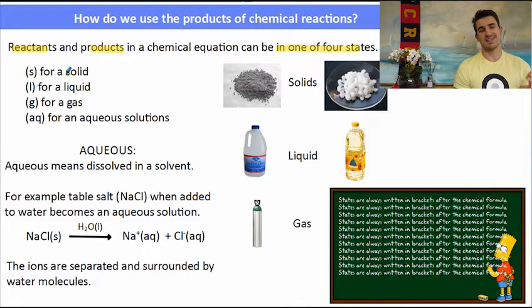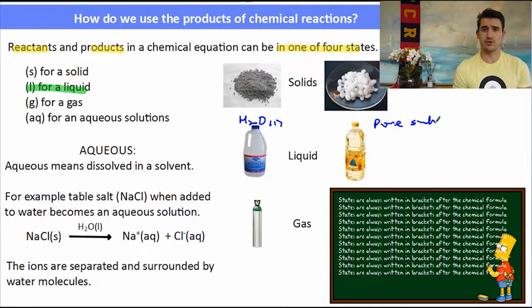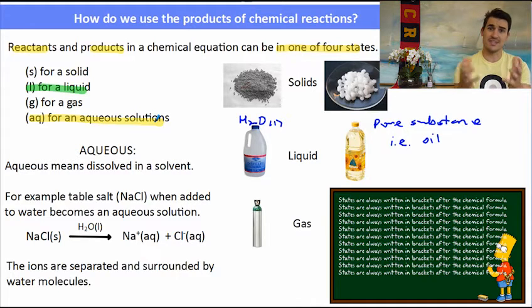When we write balanced chemical equations, we must write the states. And reactants and products can be in four different types of states. The easiest ones for you guys to understand will be a solid and a gas. Both of those make pretty good sense to most people. Liquids on the other hand are a little bit controversial. Whenever you have water present, water will always be described as a liquid. Other than that, you'll run into very few liquids because most of them are not pure substances.